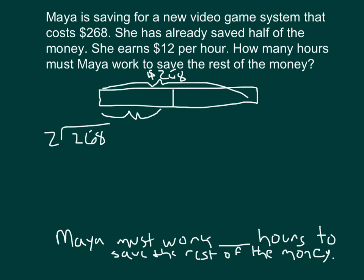So if we do that: 2 goes into 2 one whole time. 1 times 2 is 2. 2 minus 2 is 0 — that was the hundreds. Bring down the 6 tens. 6 divided by 2 is 3. 3 times 2 is 6. 6 minus 6 is 0. Bring down the 8. 8 divided by 2 is 4. 4 times 2 is 8. 8 minus 8 is 0.